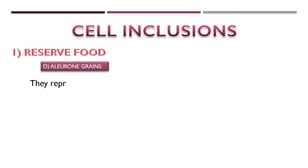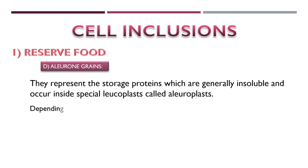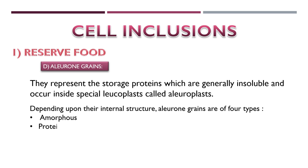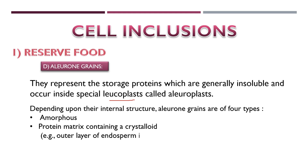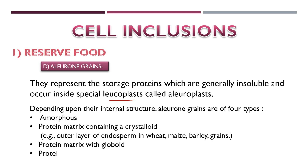Fourthly, aleuron grains. These represent storage proteins, which are generally insoluble and are stored inside special leukoplasts called aleuroplasts. This is a type of plastid. There are three types of plastids, and aleuroplasts are special leukoplasts.